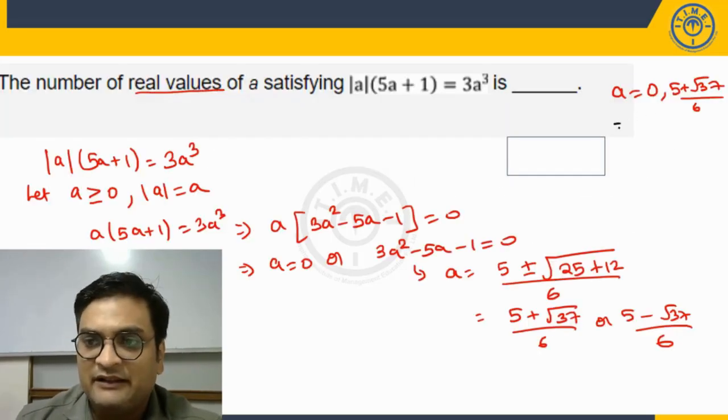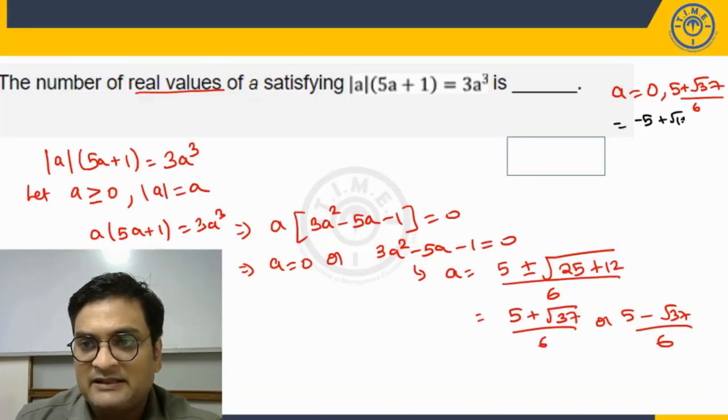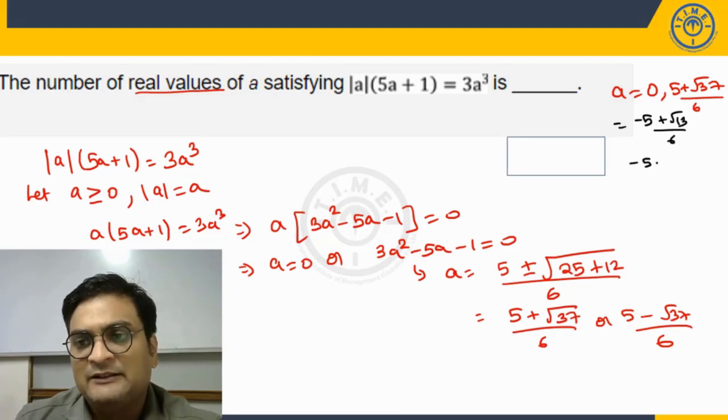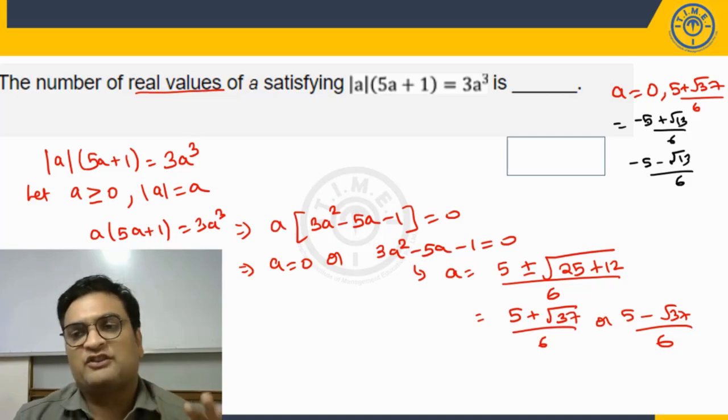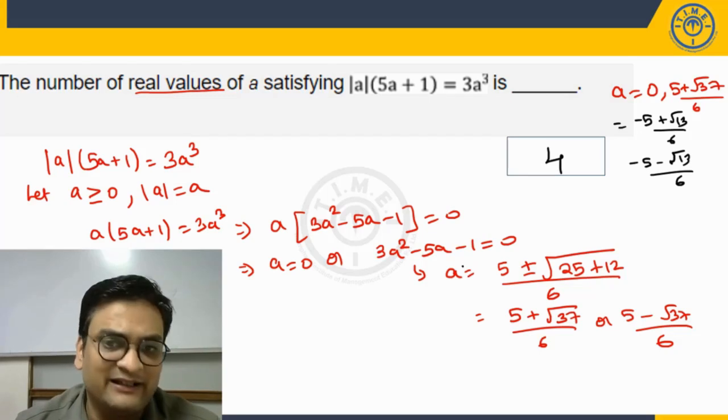So thus a equal to 0, a equal to 5 plus root 37 by 6, minus 5 plus root 13 by 6, minus 5 minus root 13 by 6. These are the four possible real values that a can take. So the question was number of real values of a satisfying this equation. So we will say there are four different values that we see here on the screen.